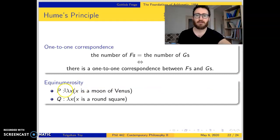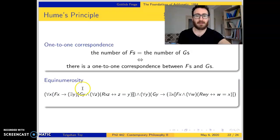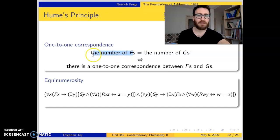This part is equinumerosity — equinumerosity between F's and G's. Equinumerosity is an easy concept. Suppose P is the concept λx[x is a moon of Venus] and Q is the concept λx[x is a round square]. Under P no object falls, and the same for Q. So there is a one-to-one correspondence between P and Q — they are equinumerous concepts. As you see, there is nothing obscure with equinumerosity, as shown in this first-order logic formulation. But the part involving 'the number of F's' or identity between numbers is the problematic part — that's why Frege devotes a whole book to the concept of number.